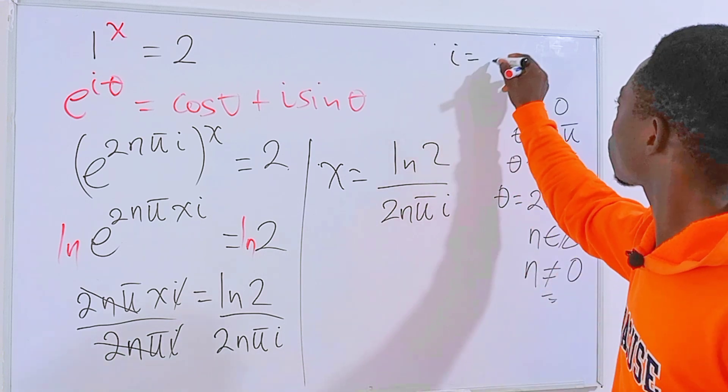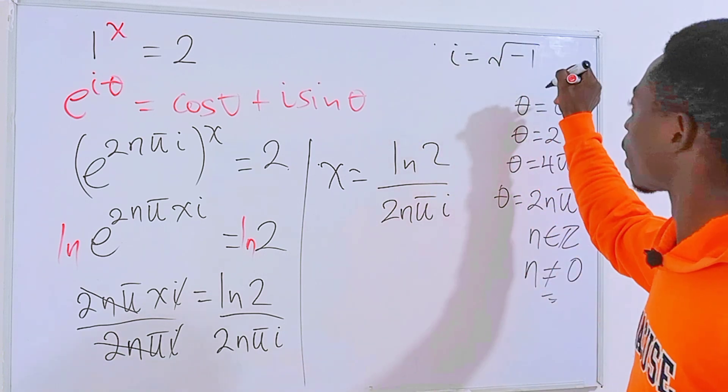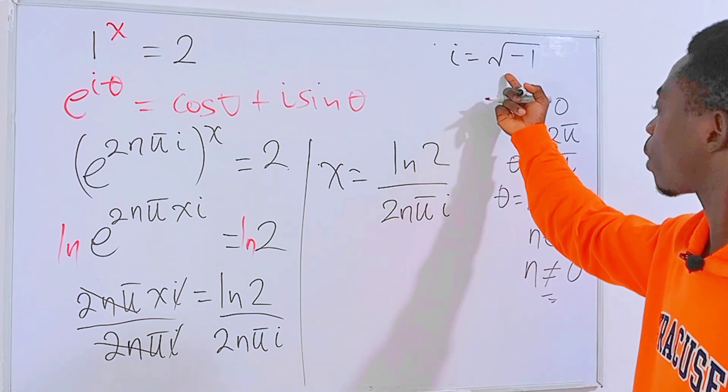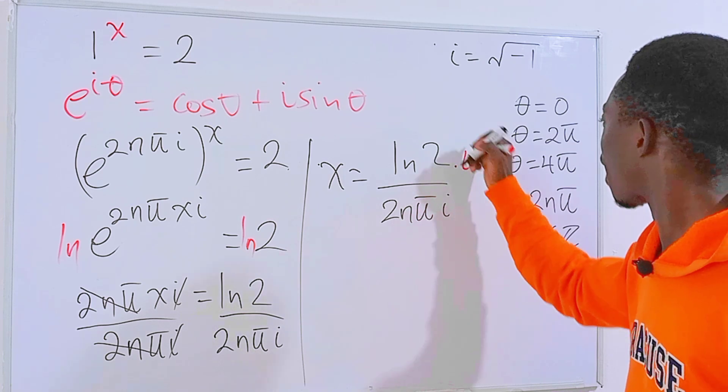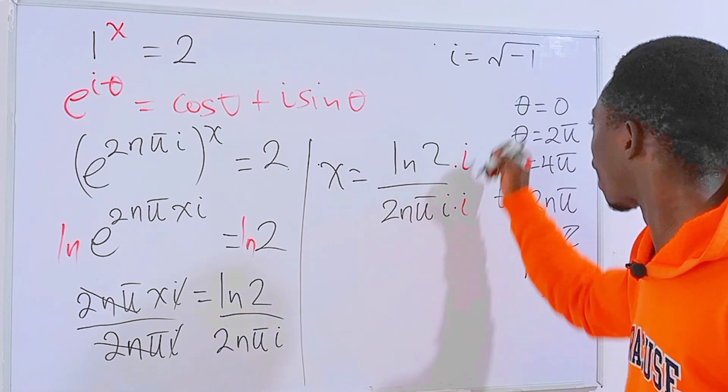Now i equals square root of negative 1. And always, we don't want square root to be a denominator. Therefore, let's multiply the numerator by i and the denominator by i.